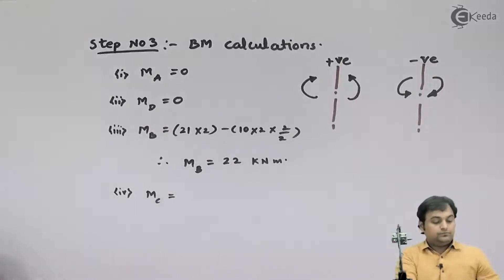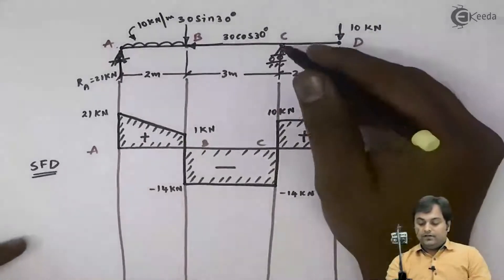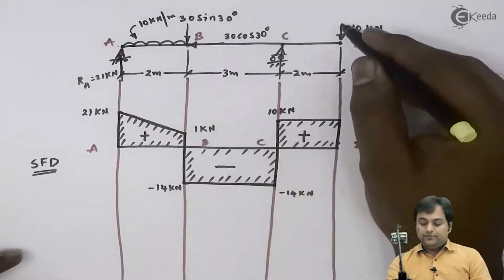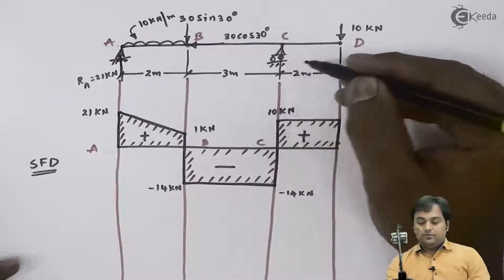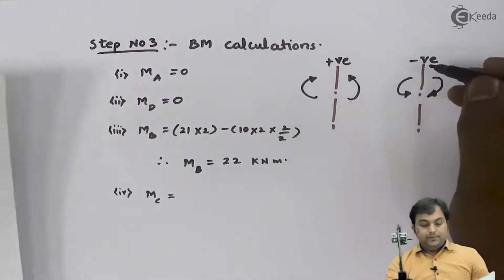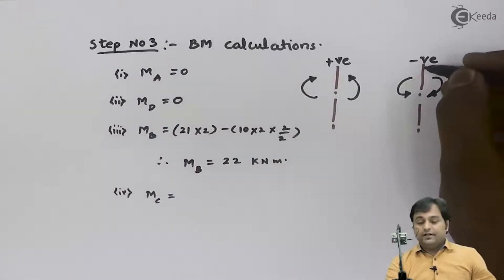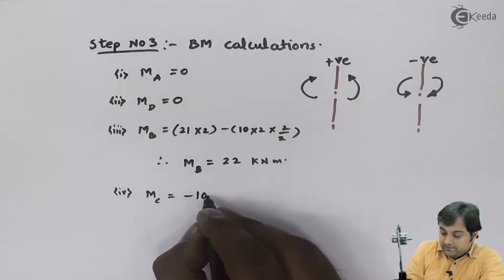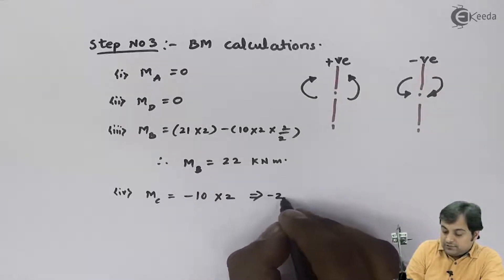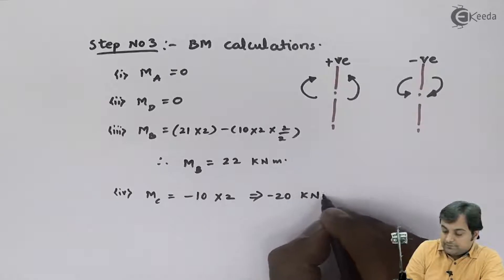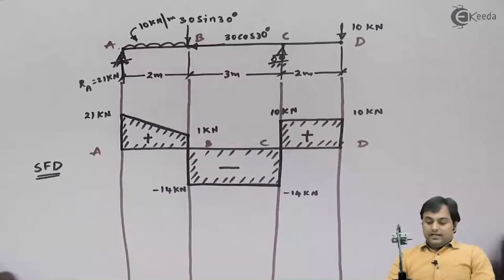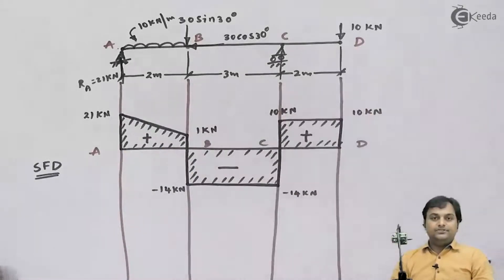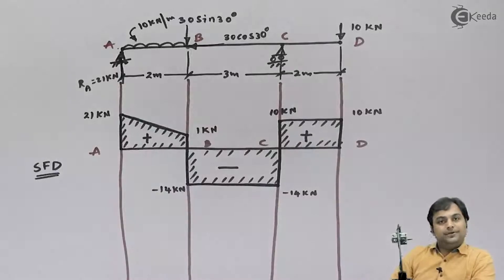Then moment at C will be equal to: here I have 10 kilonewton acting to the right of C, so it is producing a clockwise moment. Since it is clockwise to the right of the section it would be negative, so minus 10 multiplied by 2 gives minus 20 kilonewton meter. So I have calculated the moment at B and C; at A and D the moment is zero.